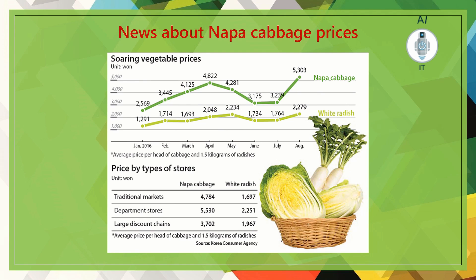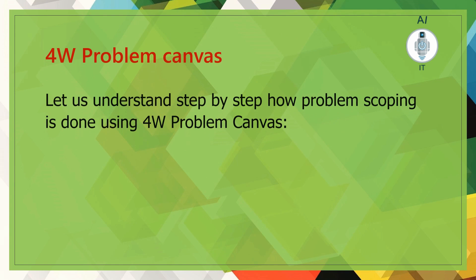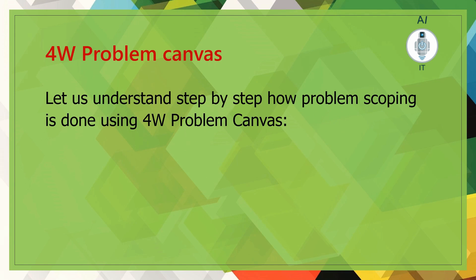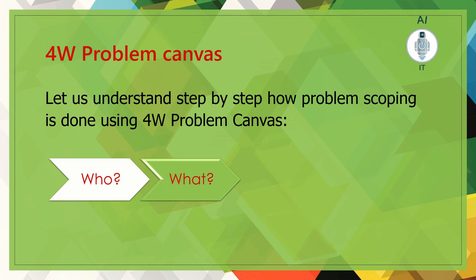Taking this problem as the target of our AI project, let us understand problem scoping. We are now going to go through the 4W problem canvas. This canvas helps us to identify four crucial parameters we need to know for solving a problem. The four Ws are: who, what, where, and why.